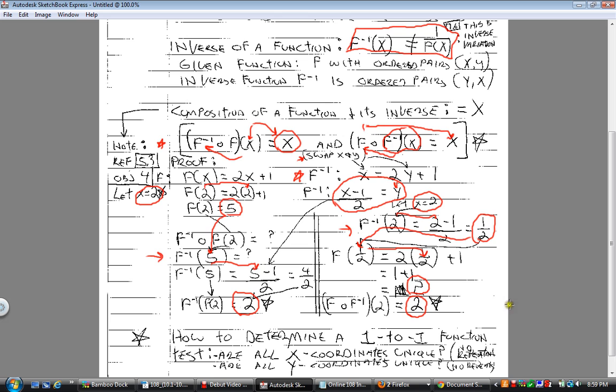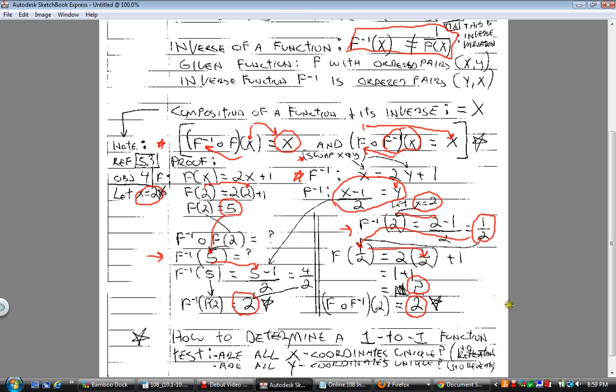That's the concept we're covering here in this section. My last note I have here is how to determine a one-to-one function. Don't forget: test that all your x coordinates are unique - there's no repeating values - and all the y values are unique. Again, there's no repeating values. We've kind of covered that before so that should just be a review. Okay, that's all for now. We finished up page 2 of our notes and we will go ahead and move on to page 3 of section 10.1. Catch you around.